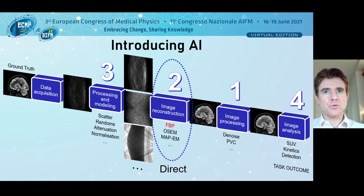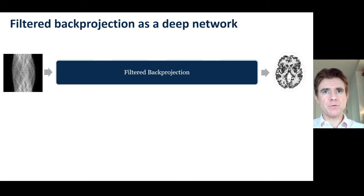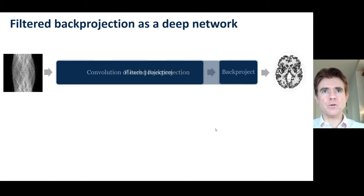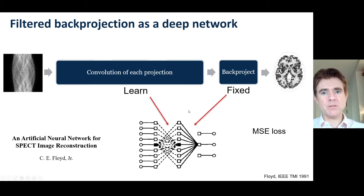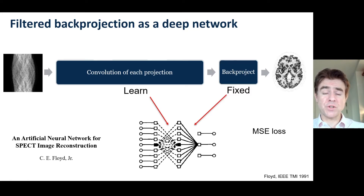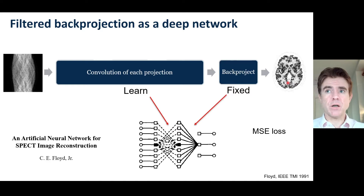Now let's turn our attention to the process of image reconstruction itself. First of all, let's look at direct methods. A very well-known direct method, filtered back projection, can itself be perceived as a cascade of mappings and therefore a deep neural network. Here's an input sinogram containing different rows, and what we can do is convolve each one of those rows with a convolution kernel, and then back project to do a filtered back projection to get the result. That's exactly what Floyd did back in the early 1990s, some of the very early work for image reconstruction in emission tomography — this was for SPECT. What he did was use examples of point sources and their sinograms, then train up one single large convolution kernel for all of the angles, all of the rows of the sinogram, to convolve them such that when they're back projected we get the reconstructed image.